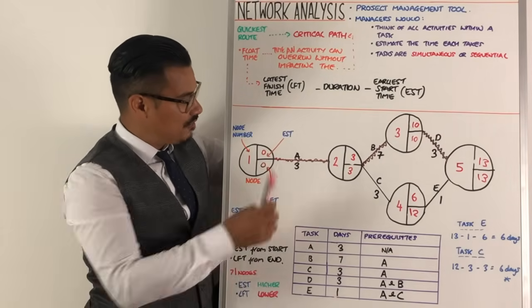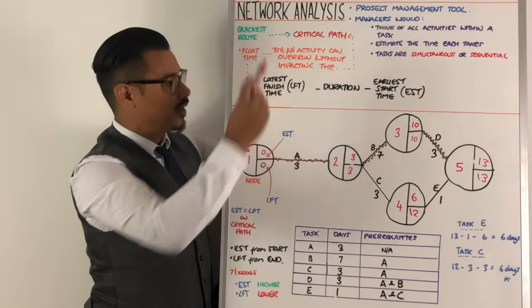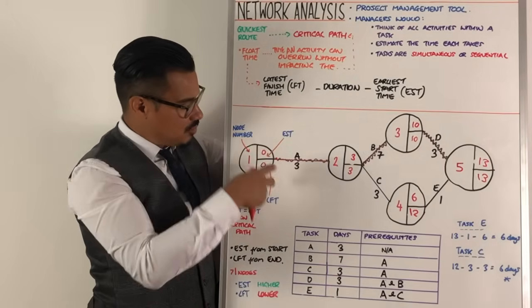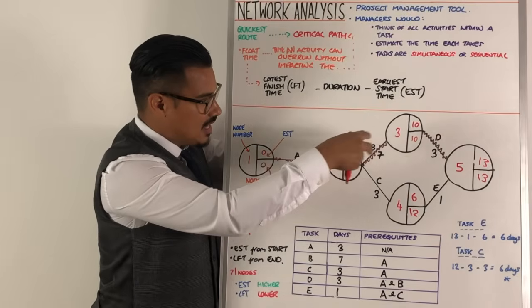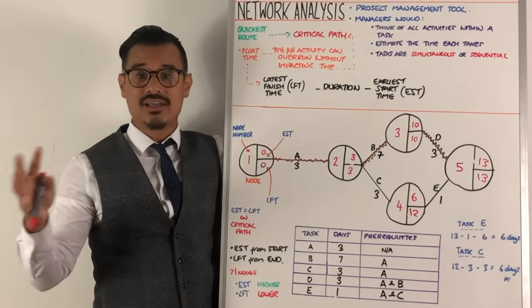The thing you'll notice is that I put the zigzag line in here, that is what's known as the critical path, the quickest route. You can see that straight away because if you see the EST equals the LFT, as you can see here, you can see here, you can see here, you know straight away that's the critical path. That's the quickest route.